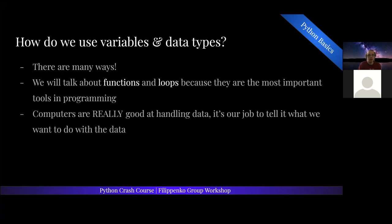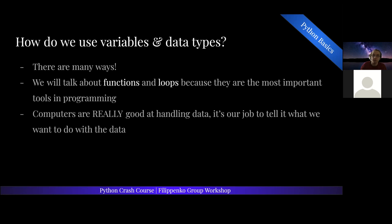So how do we use these variables and data types? Typically we think of them as being implemented into functions and loops, because they are the most important tools in programming. That's what a computer is good at — handling data. It's our job to tell the computer what we want to do with that data: maybe converting data from one form to another, or maybe doing the same task over and over again with slight variations.